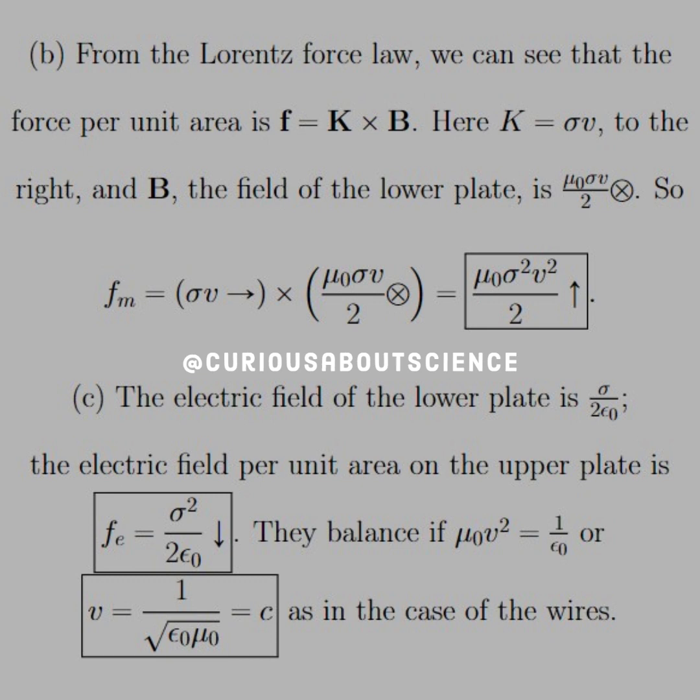So that's important because now for the Lorentz force, we had it written as an integral, which is just summing up all the possible area that there is. So the force per unit area can just be written as f equals K cross B.